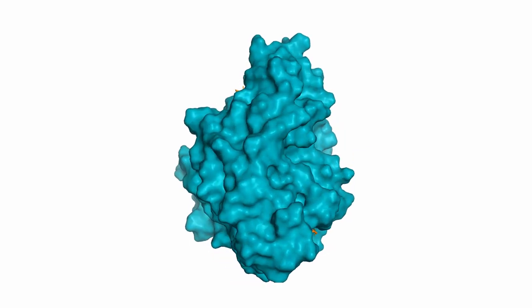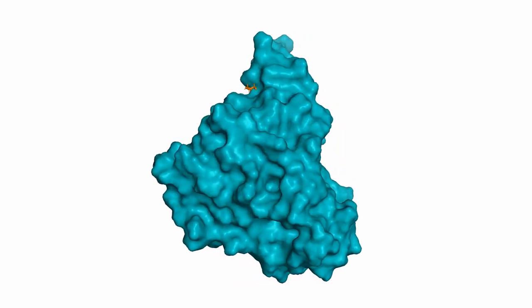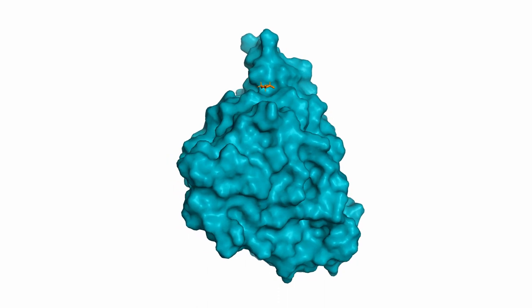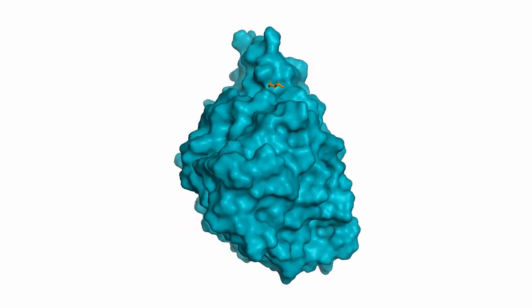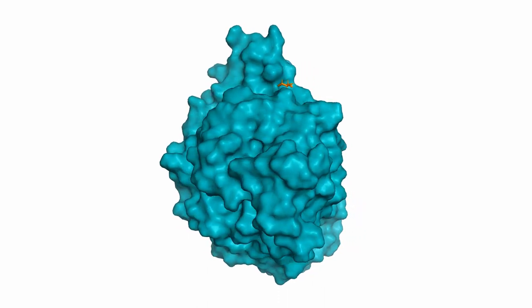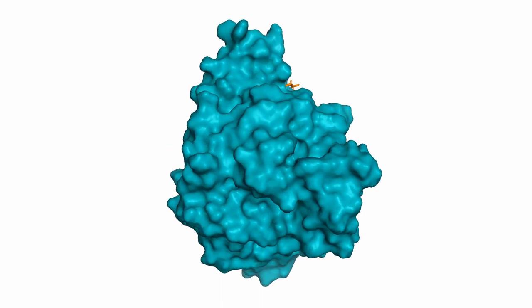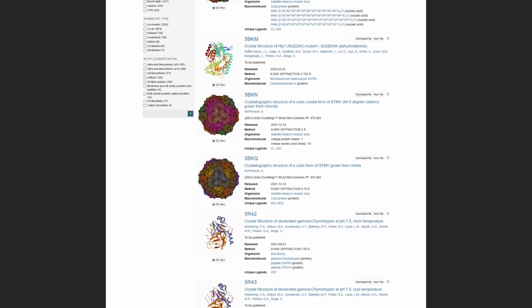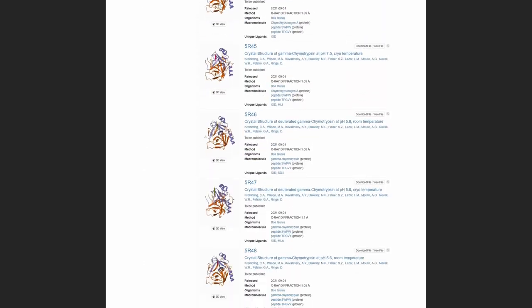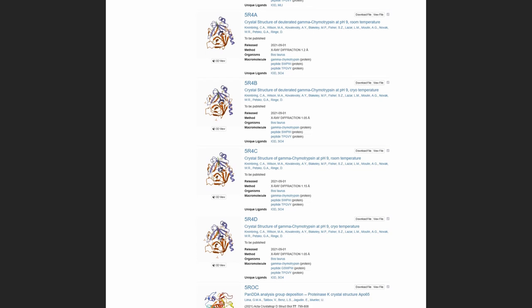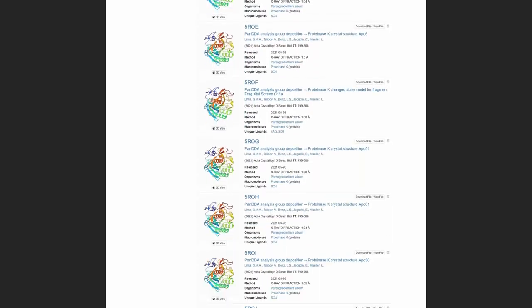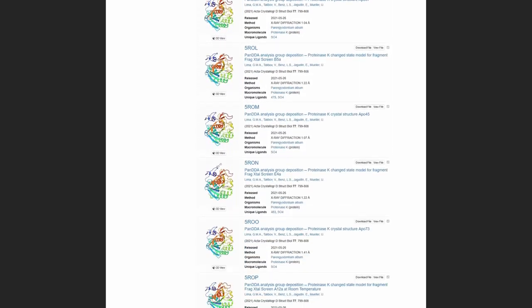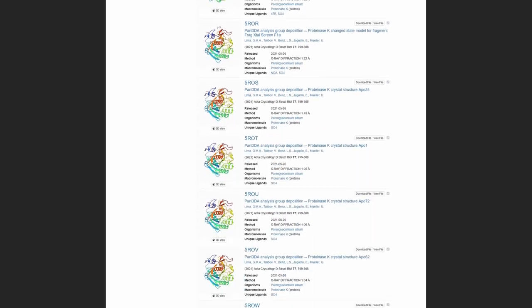Now it would be nice to know if NOS bridges are solely a feature of NGTAL or closely related enzymes, or if they appear frequently. Fortunately, the researchers had the same thought and did a survey of the whole protein databank. With regard to their search criteria, among others a resolution of less than 2 angstroms, 65,000 proteins remained. Of these, roughly 150 exhibited a possible NOS bridge.